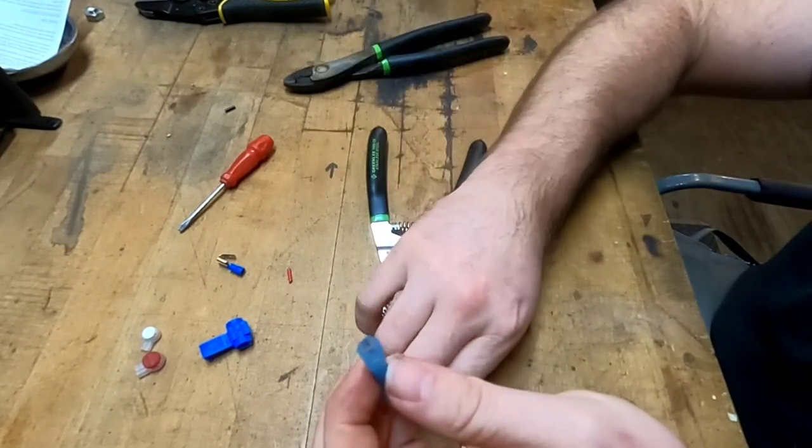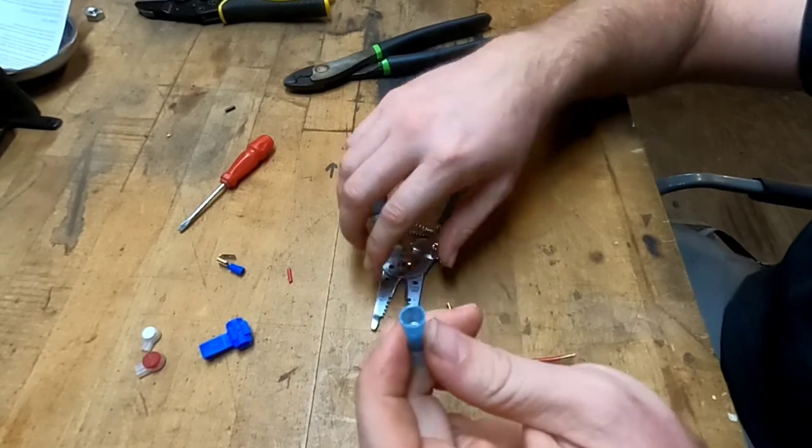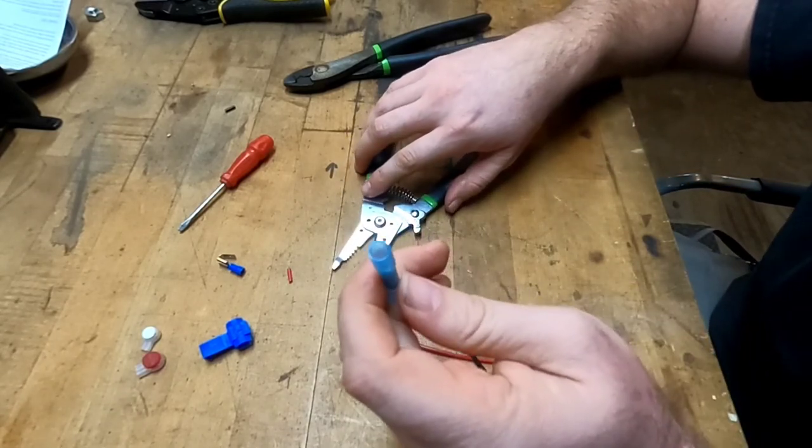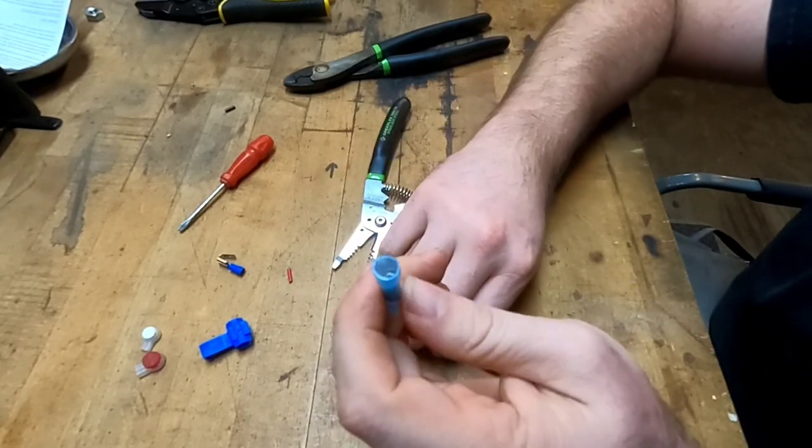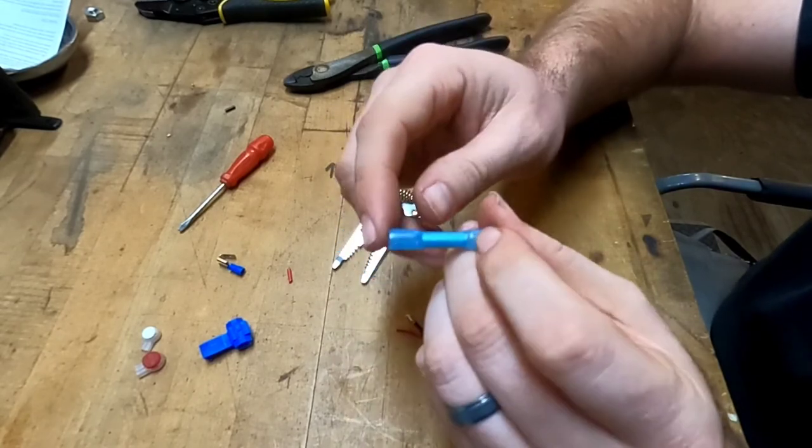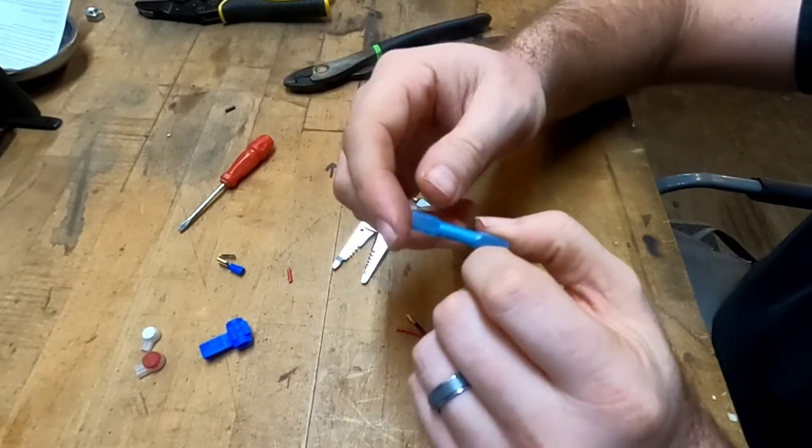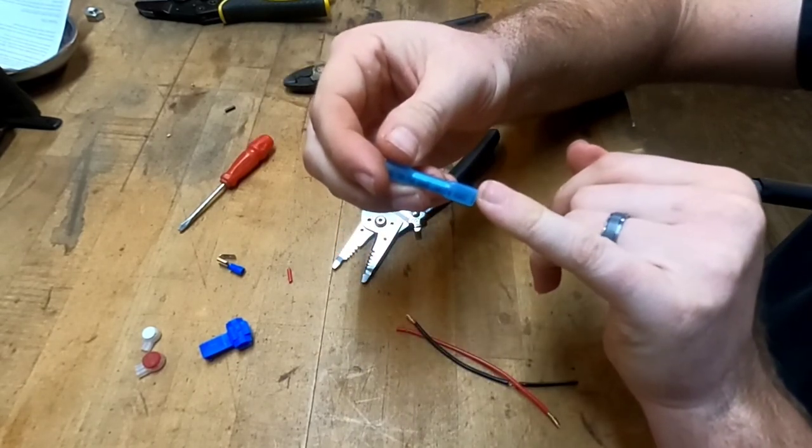So what you would do typically in this case, and we'll have another episode to explain this in detail, you would twist the two wires together that you want to splice and put them in one end and then your single wire coming out the other end.